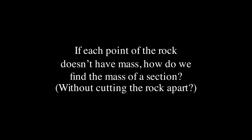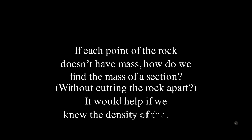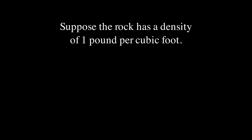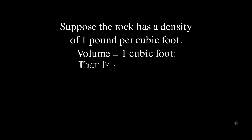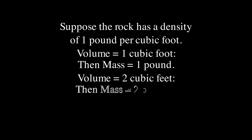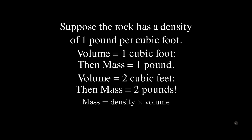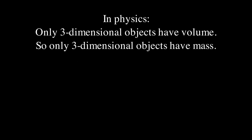Now let's go back to rocks. If each point of the rock doesn't have mass, how do we find the mass of a section without cutting the rock apart? It would help if we knew the density of the rock. Suppose the rock has a density of one pound per cubic foot — then if the volume is one cubic foot, the mass is one pound; if the volume is two cubic feet, the mass is two pounds. Mass is equal to the density times the volume. In physics, only three-dimensional objects have volume, so only three-dimensional objects have mass.